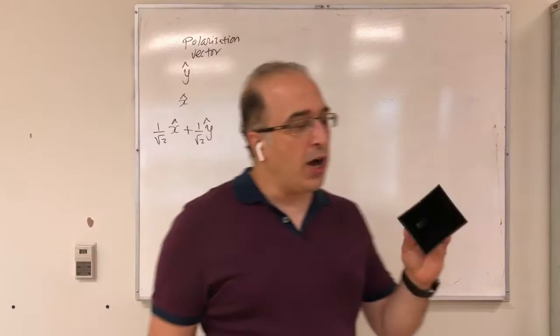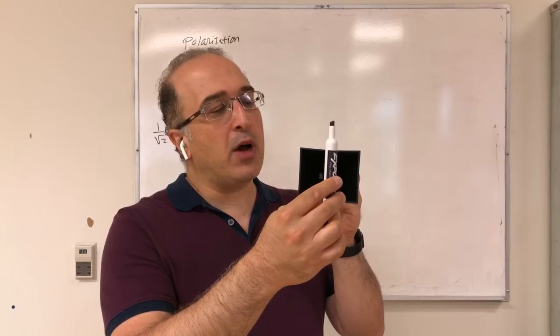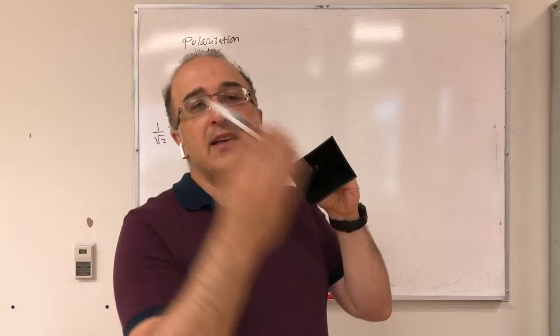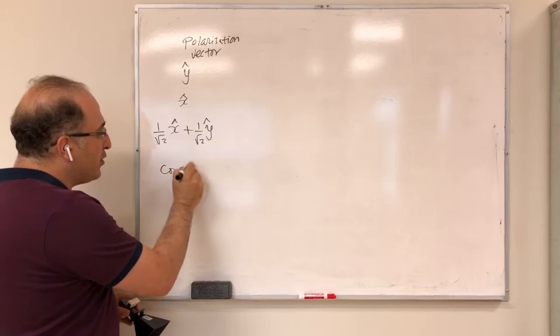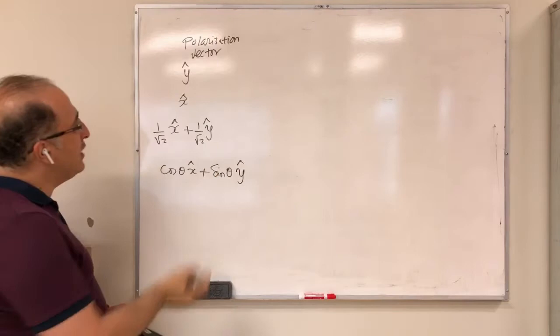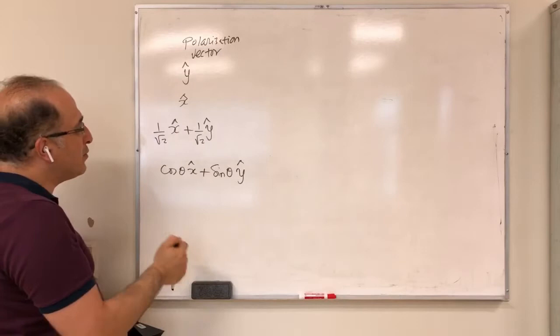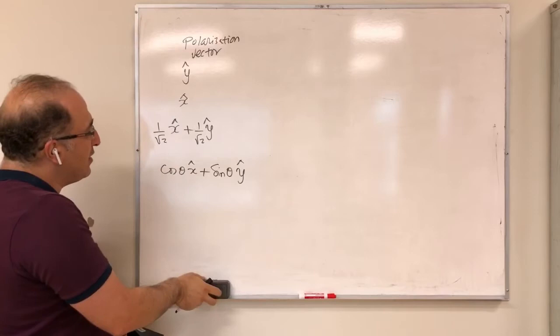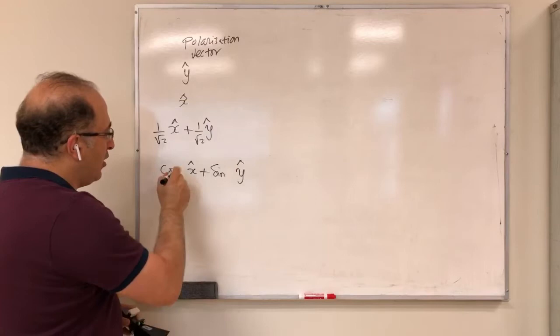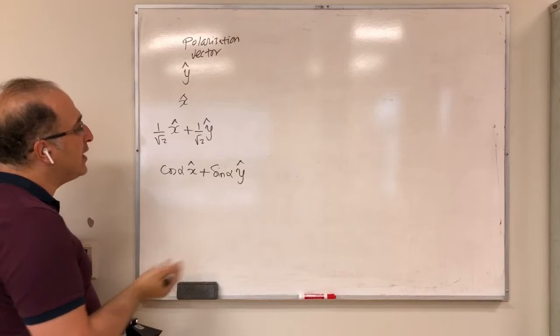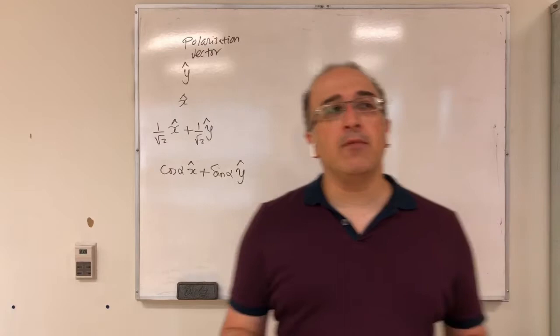In the general case, if I rotate this horn antenna by an arbitrary angle, it's still linearly polarized. I could write the polarization vector as cos(alpha) x-hat plus sin(alpha) y-hat. In this particular example theta would be 90, in this one theta is 0. I use alpha to avoid confusion with the spherical coordinate theta. This is the polarization vector for a linearly polarized antenna.